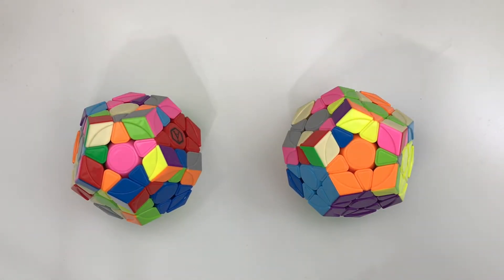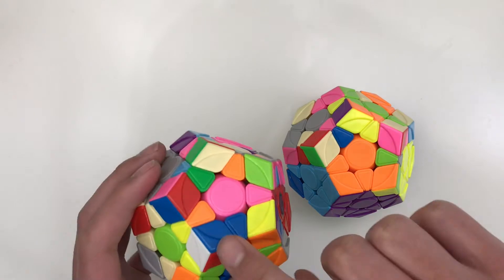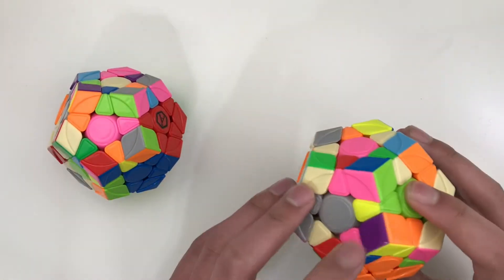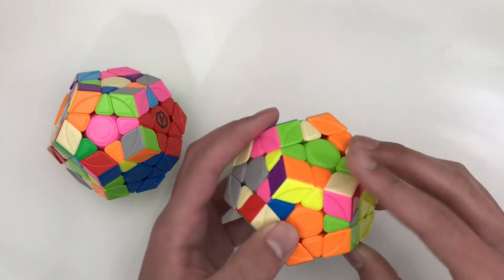For each of these tricks, I will show how that trick can be applied to both F2L and S2L. For each trick, to keep things simple and consistent, I will always use the red, white, and blue pair for F2L, and always the purple, orange, and yellow pair for S2L.